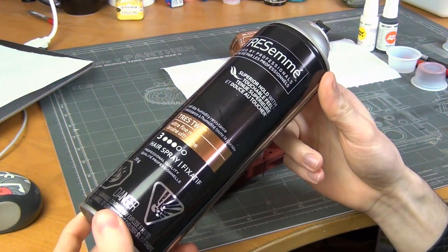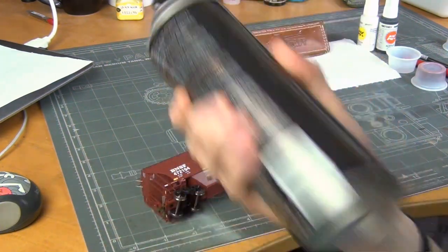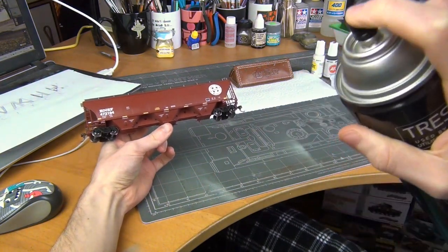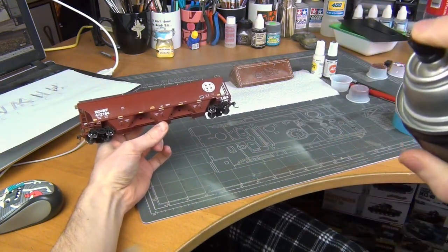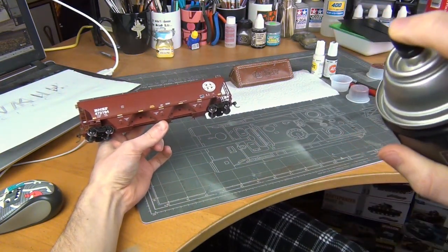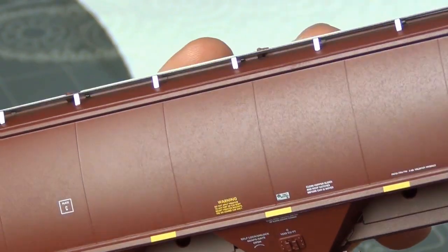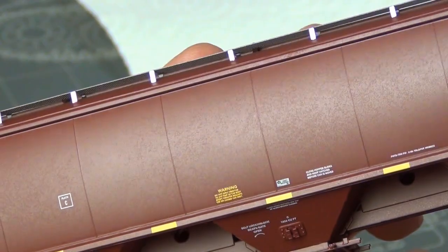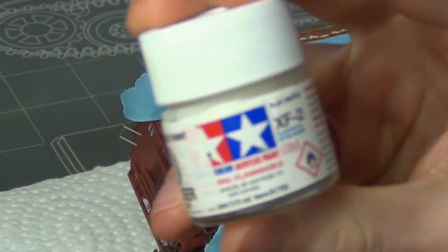First step is going to be to apply some hairspray to the model. This is Tresemme Ultra Fine Mist Firm Control and I apply two thin coats at about an arm's length away. You want the surface to have a slightly eggshell satin kind of finish on it.